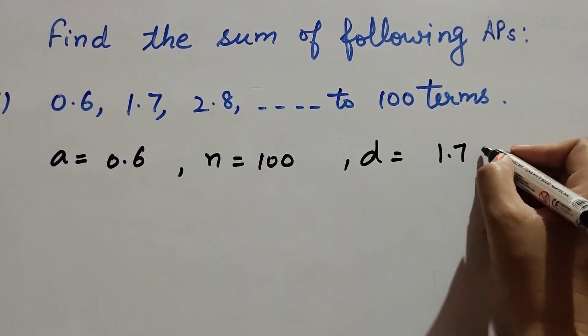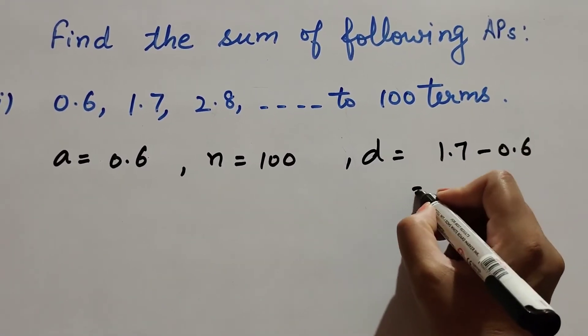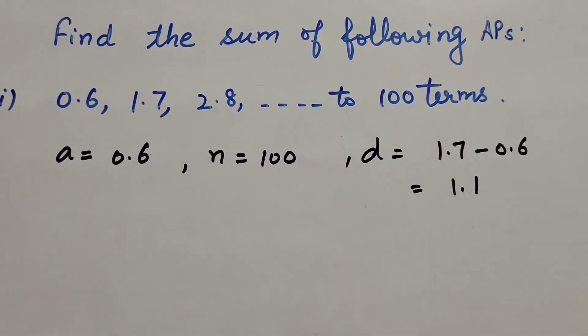Second term is 1.7 minus 0.6, the first term. So it is equal to 1.1.